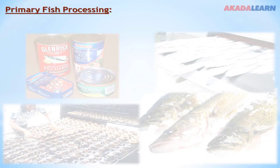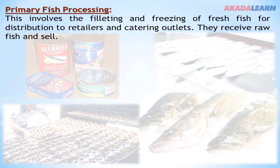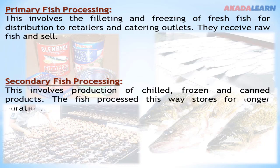Primary fish processing involves the filleting and freezing of fresh fish for distribution to retailers and catering outlets. They receive raw fish and salt. Secondary processing involves the production of chilled, frozen, and canned products. The fish processed this way stores for a longer duration.